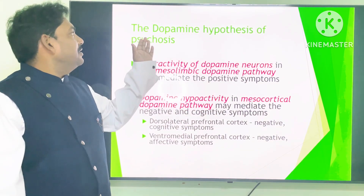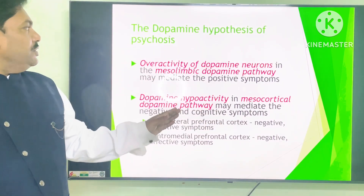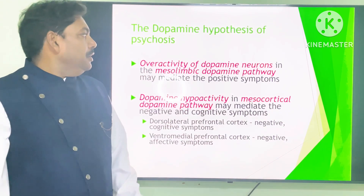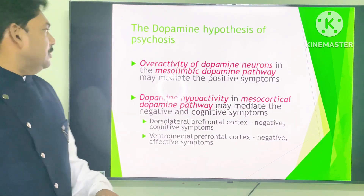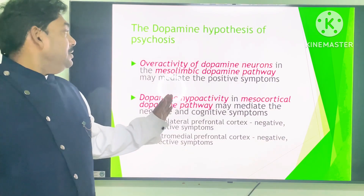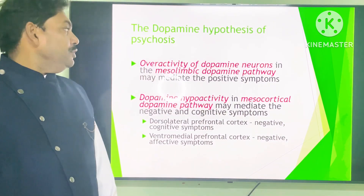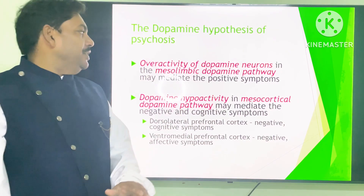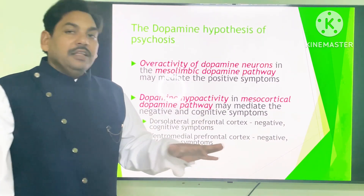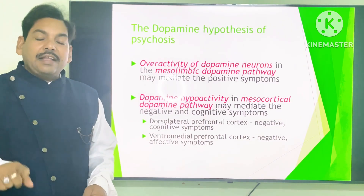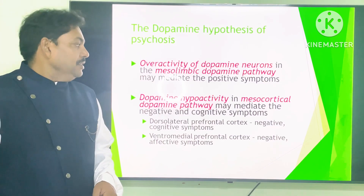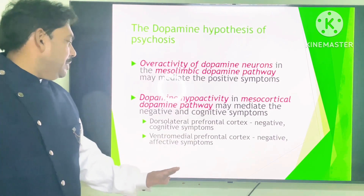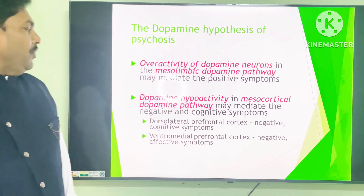The theory behind schizophrenia includes the dopamine hypothesis. Psychosis is caused by overactivity of dopamine neurons in the mesolimbic dopamine pathway, which mediates positive symptoms. Dopamine hypoactivity in the mesocortical pathway, particularly the dorsolateral prefrontal cortex, mediates negative and cognitive symptoms.